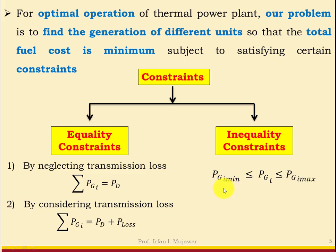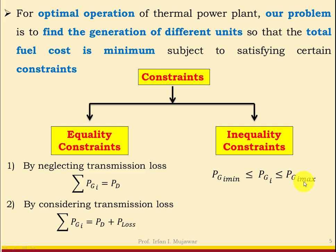The inequality constraint states: PGi_min ≤ PGi ≤ PGi_max, where i is the ith unit. Generation of the ith unit should always be less than or equal to its maximum generation and greater than or equal to PGi_min. The minimum condition is important because if generation is less than that value, thermal power plant operation is not economical or feasible. PGi cannot exceed PGi_max or there will be overloading and overheating problems.